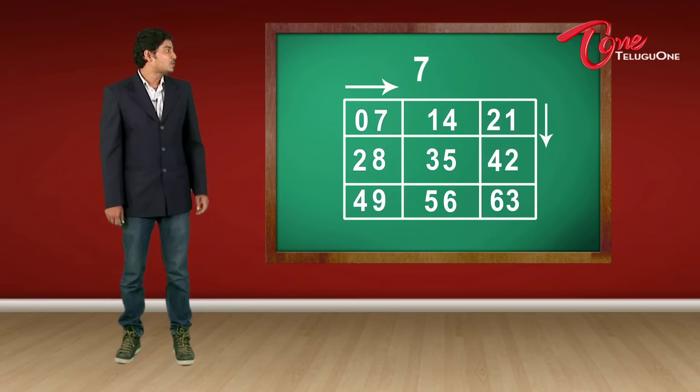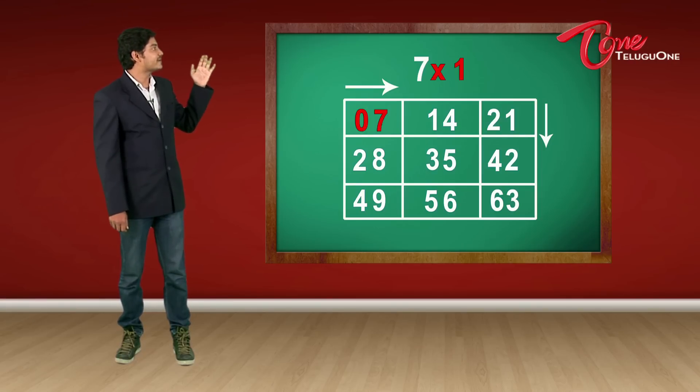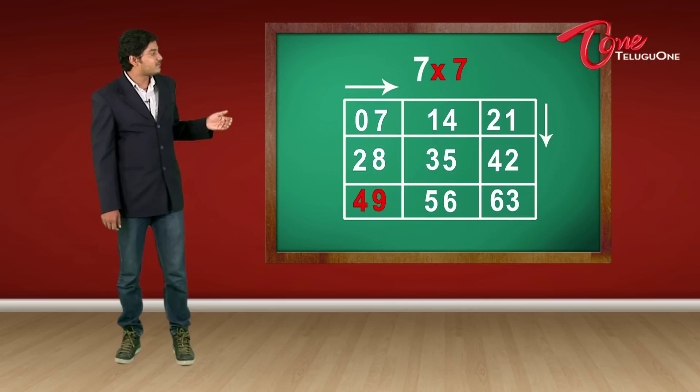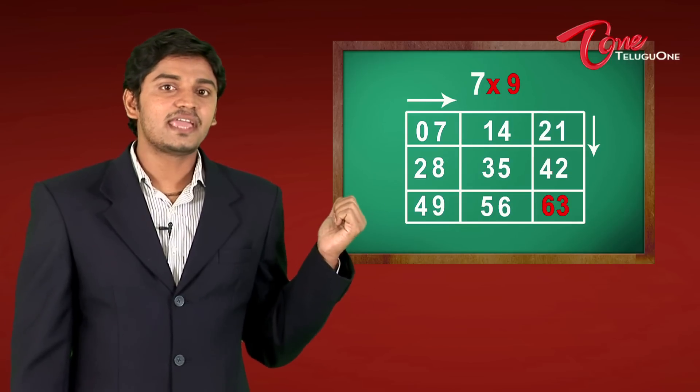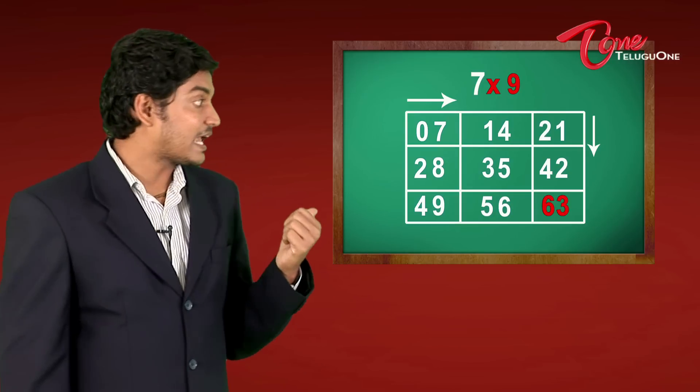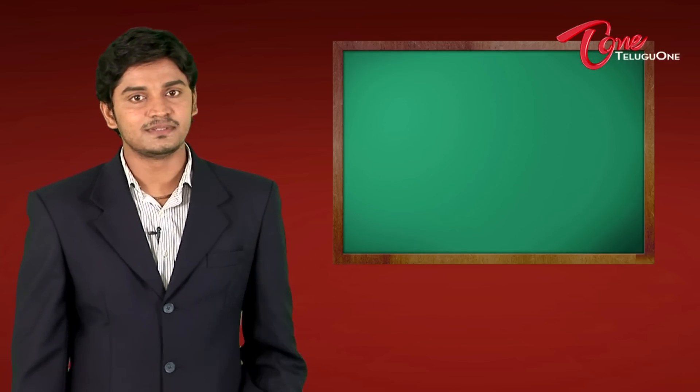So, I have my table 7 ready. 7 times 1, 07. 7 times 2 is 14. 7 times 3, 21. 7 times 4, 28. 7 times 5, 35. 7 times 6, 42. 7 times 7, 49. 7 times 8, 56. And 7 times 9, 63. So, this way, I cannot memorize tables, but I can learn using a small pattern on my 7 table.